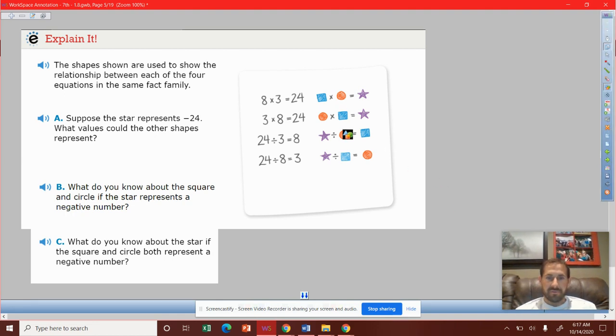We've got 8 times 3 is 24, 3 times 8 is 24. We can change the order of multiplication and still get the same answer.